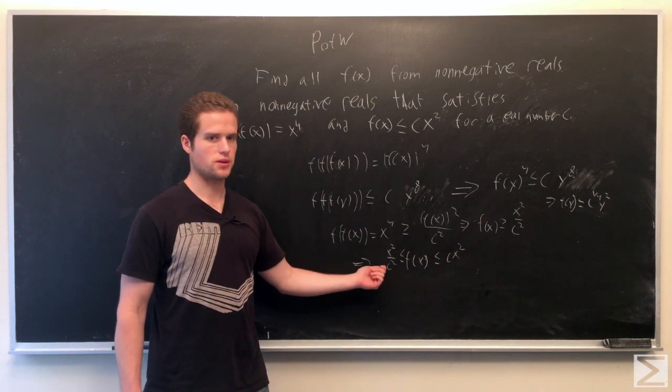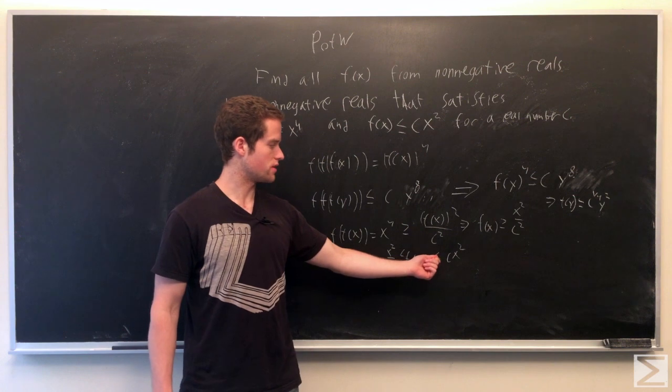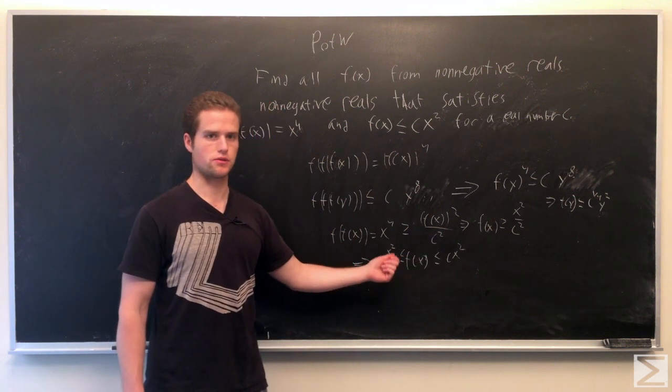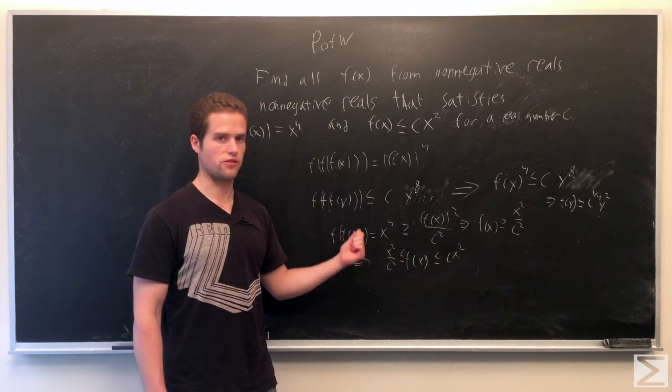Note here, since x squared over c squared must be less than or equal to cx squared, we have 1 is less than or equal to c cubed, so c must be greater than or equal to 1.